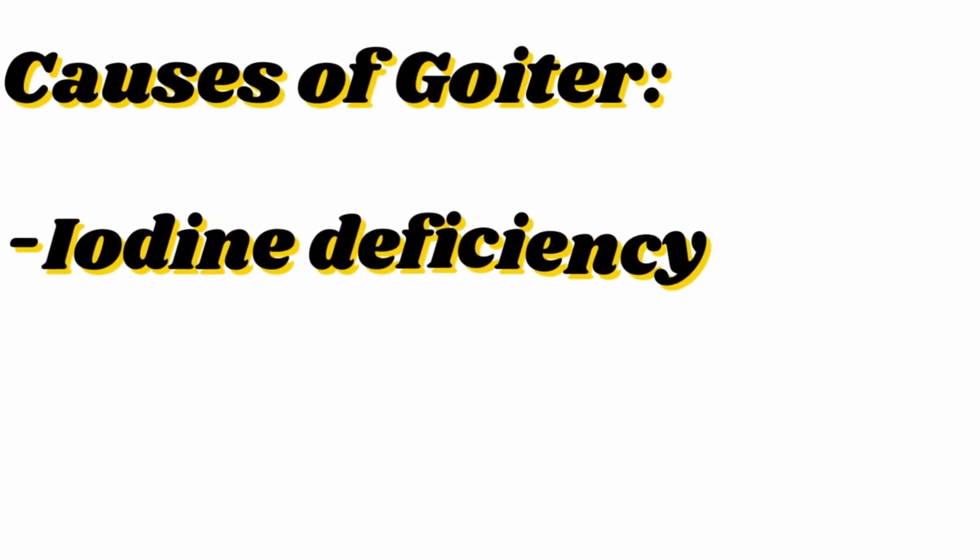So what are some of the causes of a goiter? Iodine deficiency is the most common cause of a thyroid goiter. In places where there's not enough iodine, you can get a goiter. Iodine is usually found in seawater and food — a lot of salt is iodized — so in places where there's a lack of that, there's a high risk of goiter.